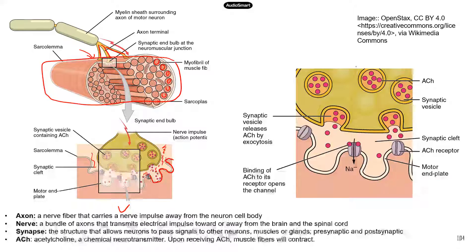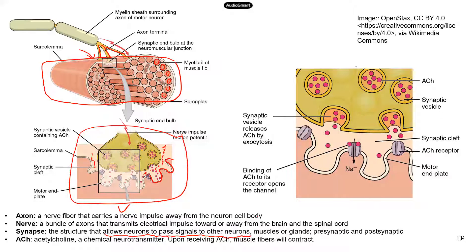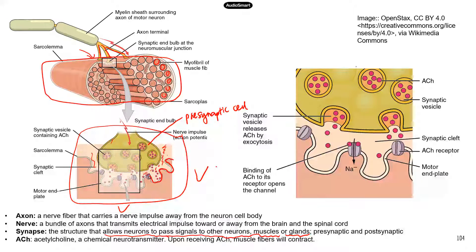This whole structure is called a synapse. The synapse is the structure that allows neurons to pass signals to other neurons, or muscle fibers, or glands. In this case, this motor neuron that controls muscle contraction is the presynaptic cell, and the muscle that's controlled by the presynaptic neuron is called the postsynaptic cell. The presynaptic cell is going to transmit signals and regulate or control the postsynaptic cell — in this case, the motor neuron controlling the muscle contraction.